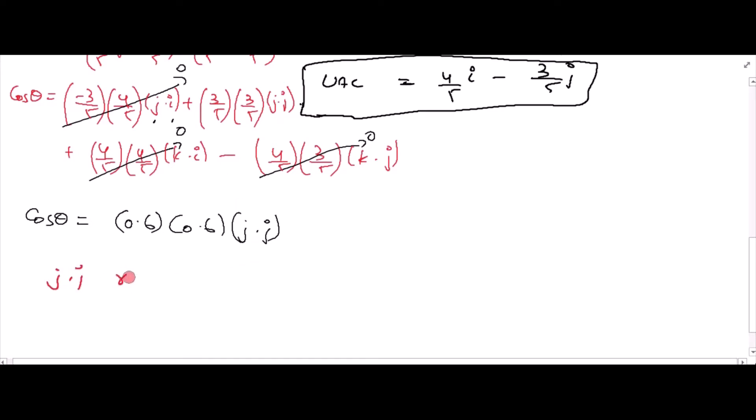J dot j represents two parallel vectors. The angle between them is 0 and cos 0 is 1.